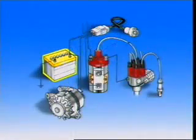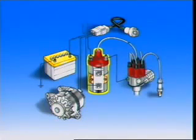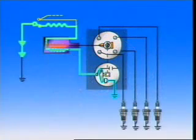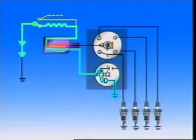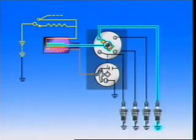The energy comes from the battery and alternator, and the voltage is increased by the ignition coil. The system has two circuits: the primary, or low tension circuit, initiates the spark; the secondary, or high tension circuit, produces the high voltage and distributes it to the spark plugs.